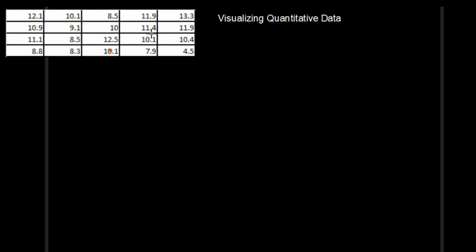In our last case with qualitative data, we created a frequency table by simply counting how many times we saw each color — for example, six reds. We can't really do the same thing here. While there are a few duplicates like 10.1 and 8.5, for the most part these values are unique with not much overlap, so we can't just count them up the same way.